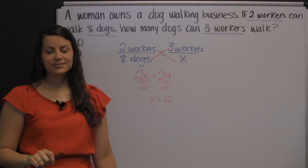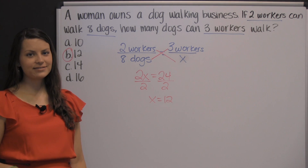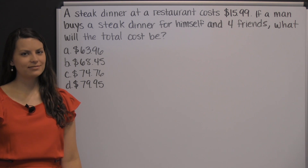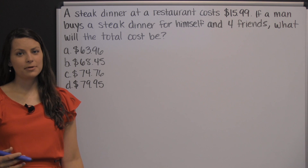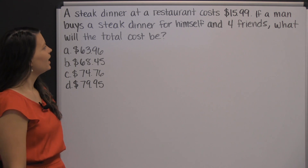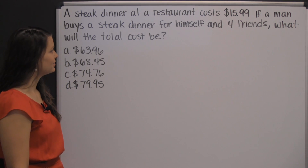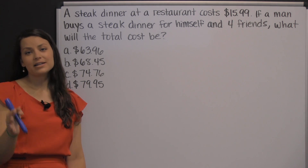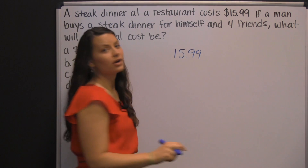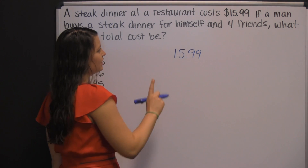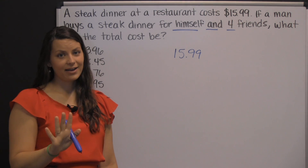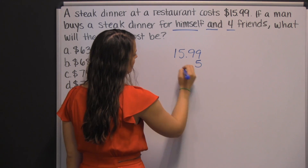There you have one example of an arithmetic problem you might see on the arithmetic reasoning section of the ASVAB. The arithmetic reasoning section has a lot of word problems. Here's an example: A steak dinner at a restaurant costs $15.99. If a man buys a steak dinner for himself and for four friends, what will the total cost be? They're expecting you to not read carefully — to just see $15.99 and the four and multiply. What you have to notice is he's buying this steak dinner for himself and for four friends, meaning he's buying a total of five steak dinners. So we need to multiply $15.99 times five.